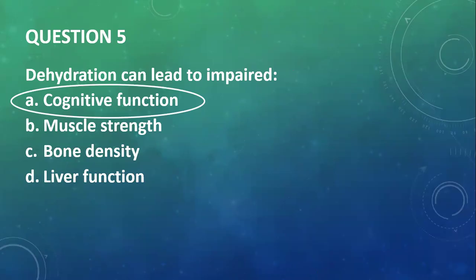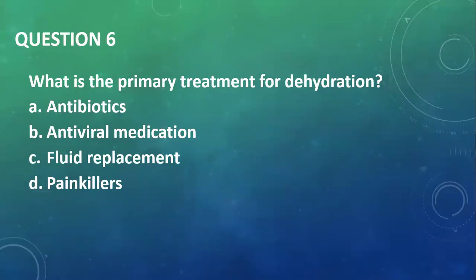Question 5: Dehydration can lead to impaired cognitive function, muscle strength, bone density, or liver function? Cognitive function because it has to do with dizziness, ataxia, and all that that is associated with dehydration. Question 6: What is the primary treatment for dehydration? You should actually replace fluid—the fluid given for replacement usually would be ORS, the oral rehydration therapy, while taking care of whatever it is that is causing the dehydration.